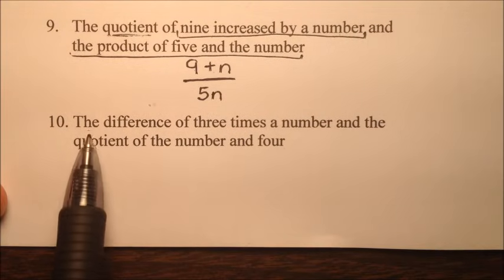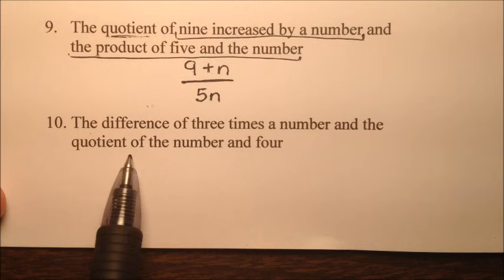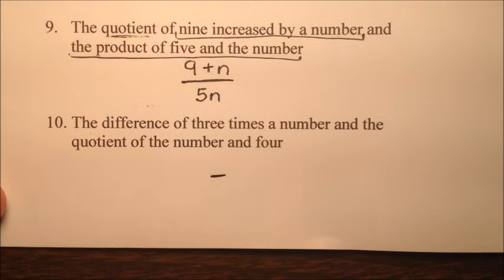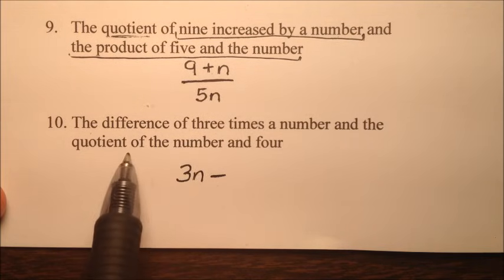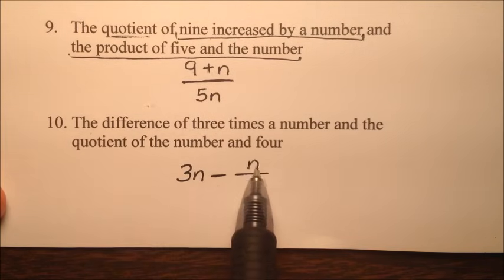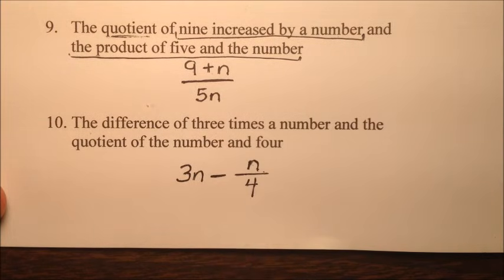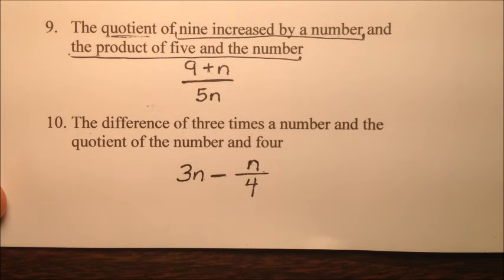Number ten says the difference of three times a number and the quotient of the number and four. We've got a difference, so we subtract. We have three times a number, minus the quotient of the number and four. Quotient means divide, so the number divided by four. The answer is three n minus n over four. Those are the answers for the first ten problems on your review sheet.